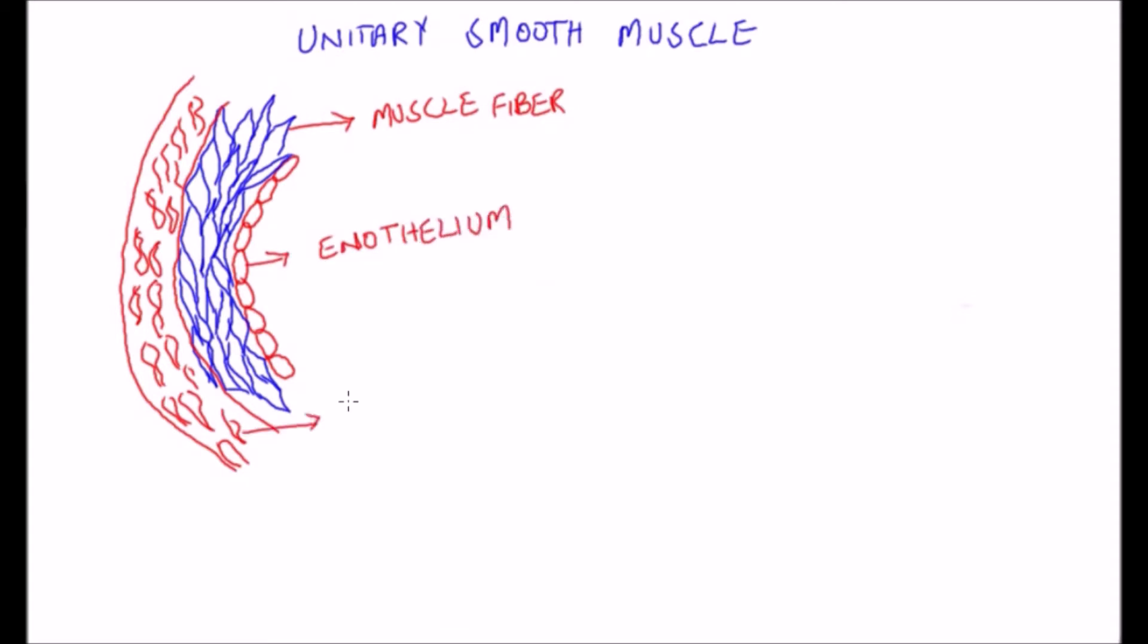Unitary smooth muscles means a mass of 100 to 1000 smooth muscle fibers that contract together as a single unit. Their cell membranes are adherent to one another at multiple points so that the force generated in one muscle fiber can be transmitted to the next.